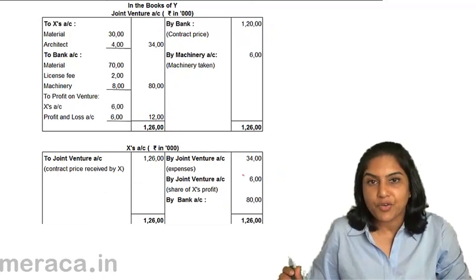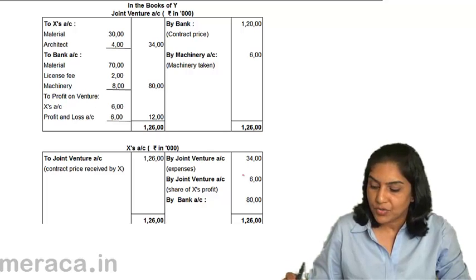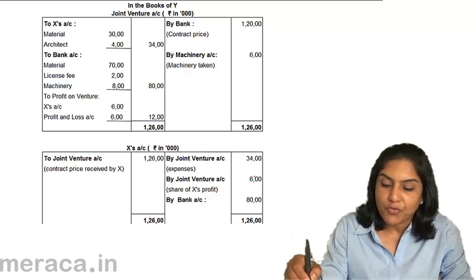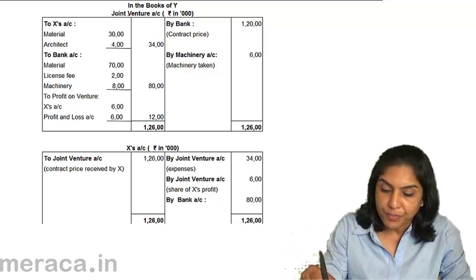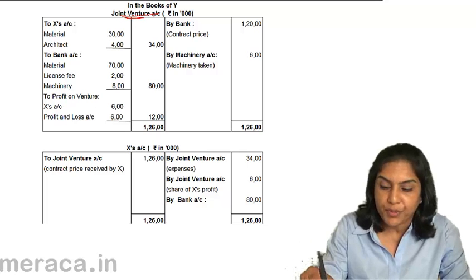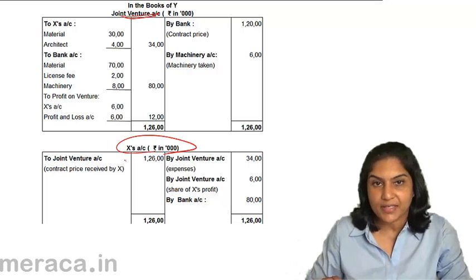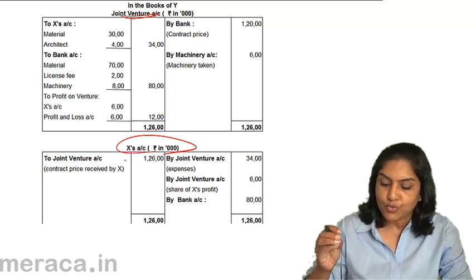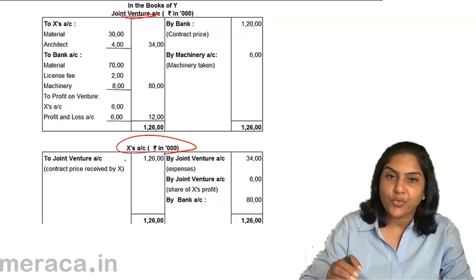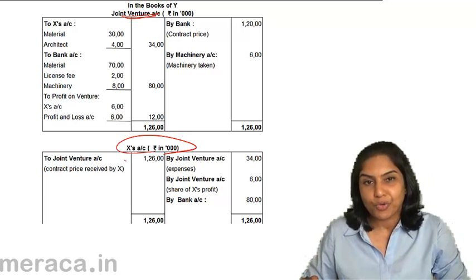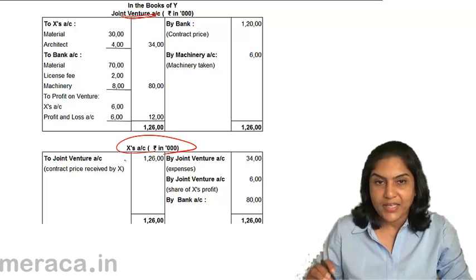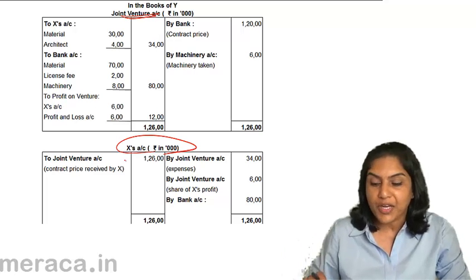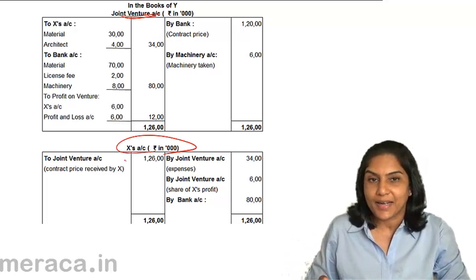In the books of Y, the accounts prepared would be Joint Venture Account and X's Account. For any expenses paid by X, Joint Venture Account would be debited and X's Account would be credited. If X is to receive money, X's Account would be debited; and if it is income from the joint venture, Joint Venture Account would be credited.